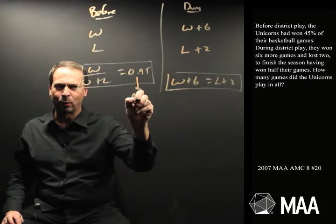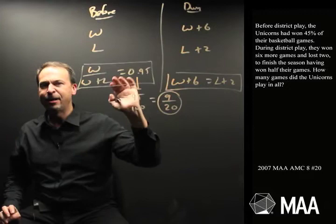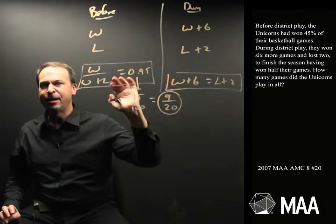Well, they're both multiples of five. What's that? Nine times five and twenty times five. It's really nine twentieths. So it tells me out of every twenty games played, nine were wins, which means eleven were losses.